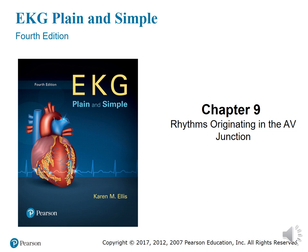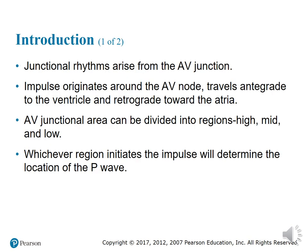Junctional rhythms arise from the AV junction, which is the tissue located between the right atrium and the ventricle, surrounding the AV node. The impulse generates around the AV node and travels anterograde or forward towards the ventricle, and retrograde or backward towards the atrium.